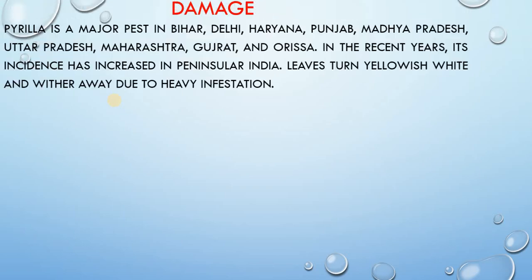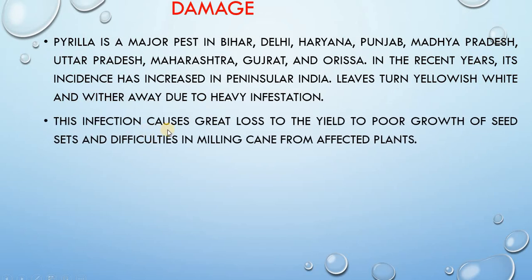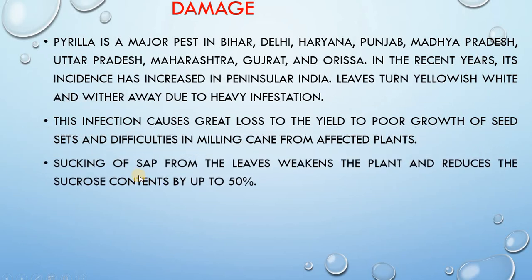Regarding the damage caused by Pyrella, it is a major pest in Bihar, Delhi, Haryana, Punjab, UP, Maharashtra, Gujarat and Odisha. In recent years its incidence has increased in peninsular India also. Leaves turn yellowish-white and wither away due to heavy infestation. This infection causes great loss through poor growth of seed sets and difficulties in milling cane from affected plants. Sucking of sap from the leaves weakens the plant and reduces the sucrose content by up to 50 percent, which is a major loss for sugarcane.